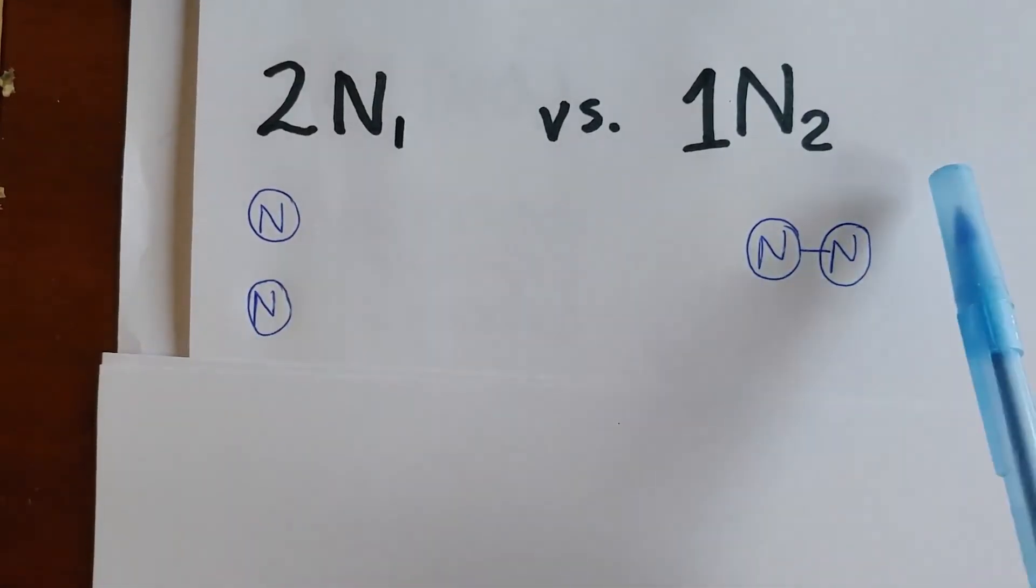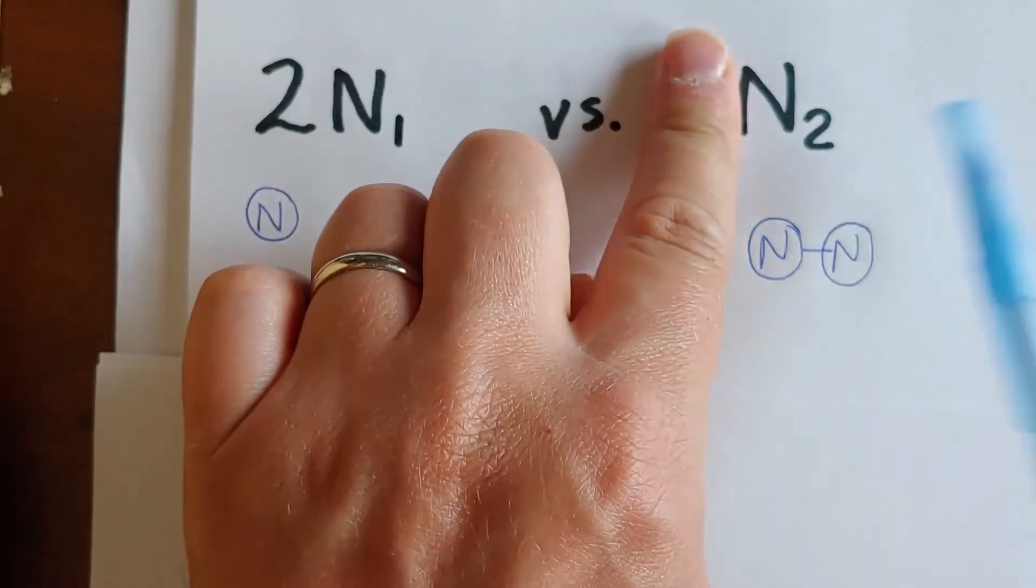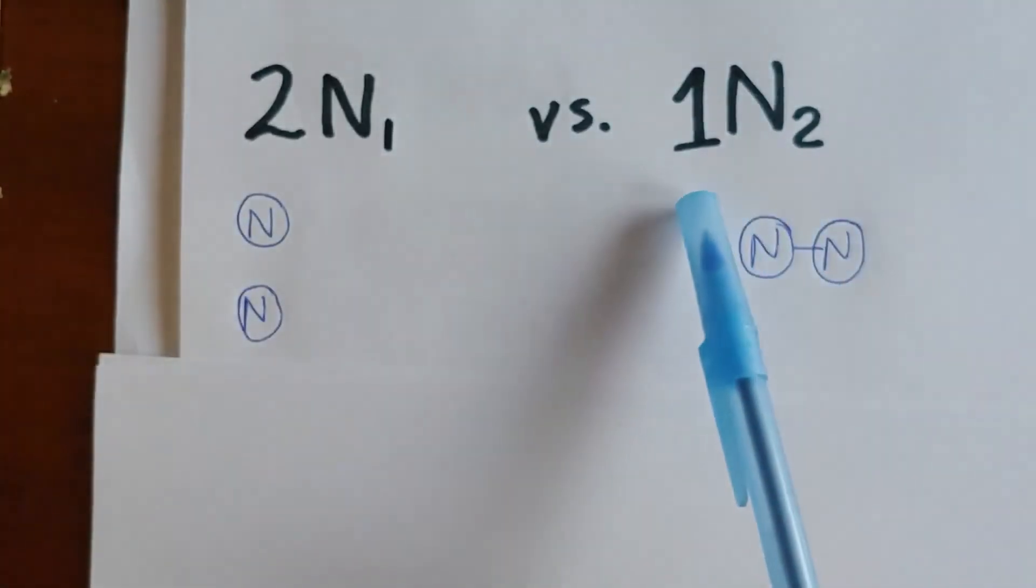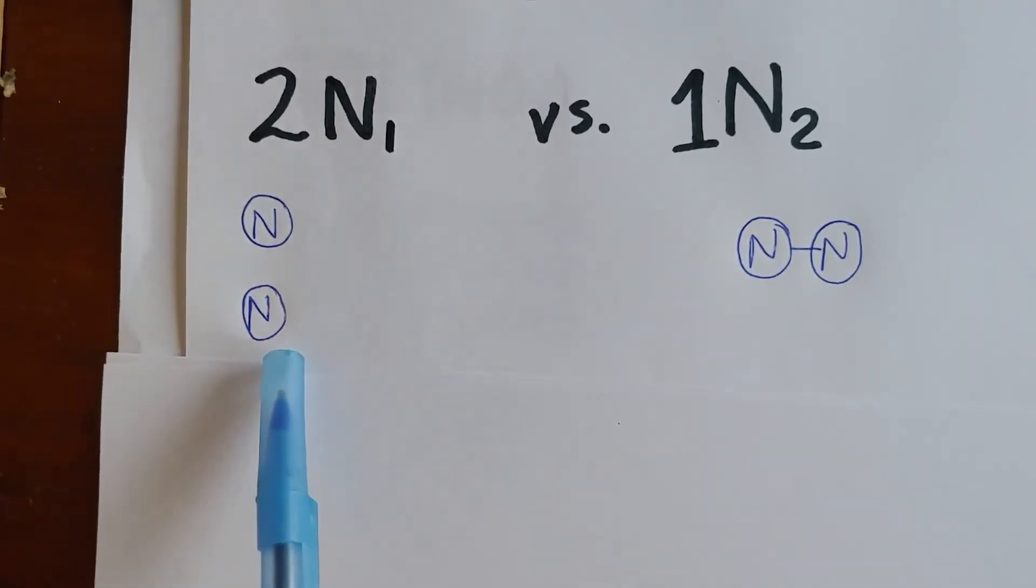On the other hand, for N2, we cover the coefficient. We draw N2, which is two nitrogens together. And then we have only one copy of it. You notice that one thing that's very similar about these is that they have two nitrogen atoms. But whether those nitrogen atoms are separate or together can make a big difference in your circle models, especially when we start representing chemical equations later.